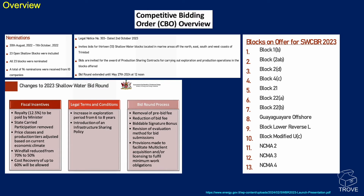Here's an overview of the shallow water competitive bidding round 2023/2024. 96 nominations were received from 10 companies, legal notices were given, and the bid round was extended until May the 27th, 2024. Changes were made: the royalty stands at 12.5% to be paid to the minister, a windfall tax has been reduced, and cost recovery up to 60% will be allowed. The exploration period has been extended from six to eight years, and there's an introduction of an infrastructure sharing policy. The bid round process and available blocks are laid out here.